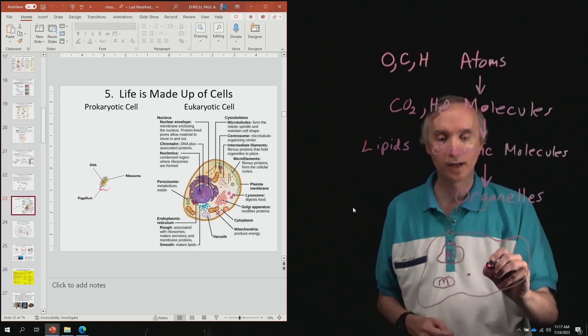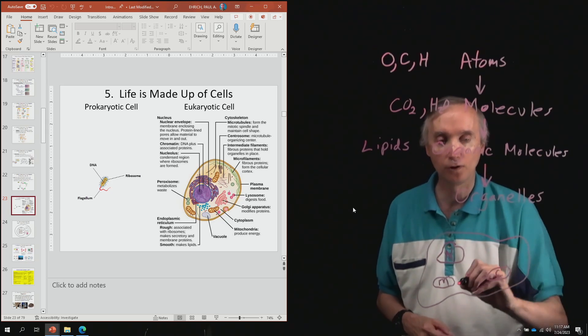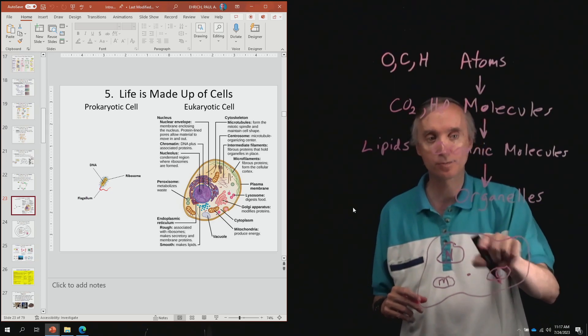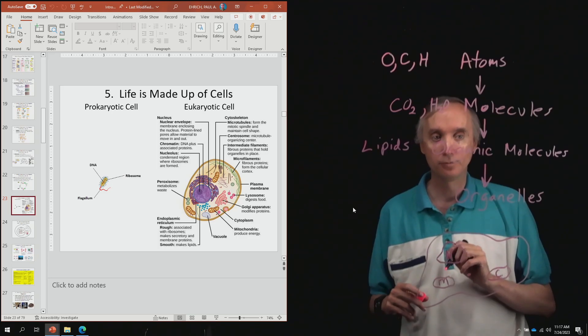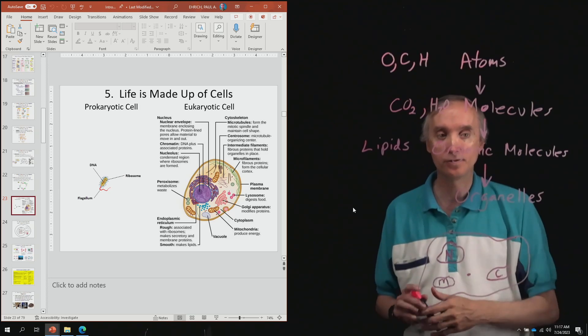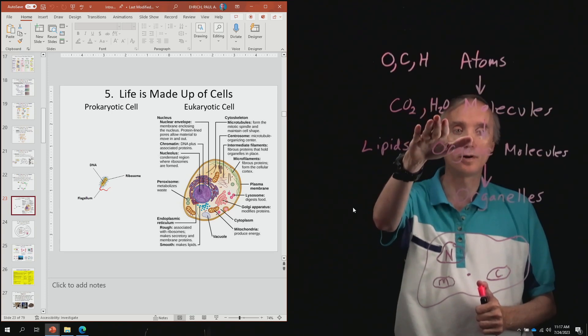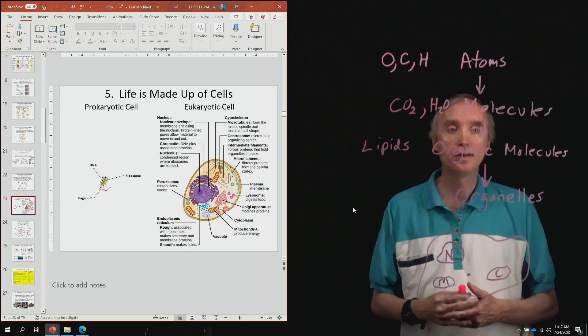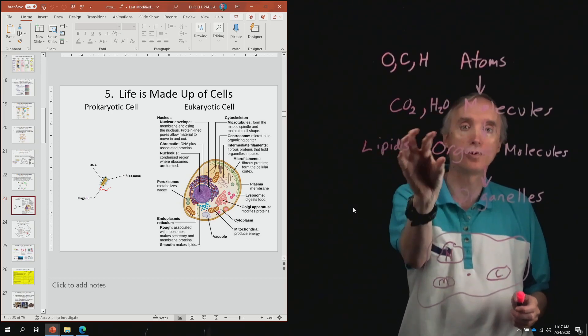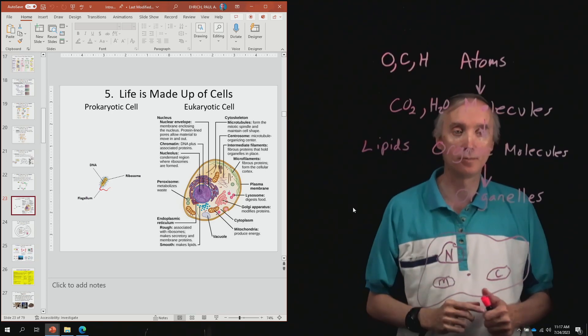And then there's one more that I'd like for you to be familiar with. And that is C for chloroplast. Now animal cells do not have this particular kind of organelle, but plants do. And so the function of the chloroplast is that it is going to take carbon dioxide and water and sunlight, and then it's going to use it to put these things together to make organic molecules such as sugars that are going to make up the plant.